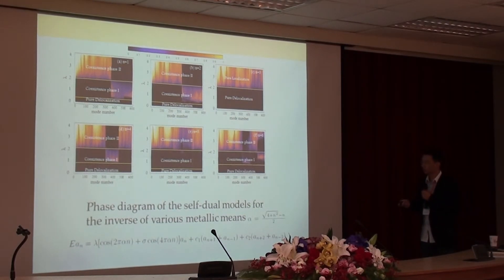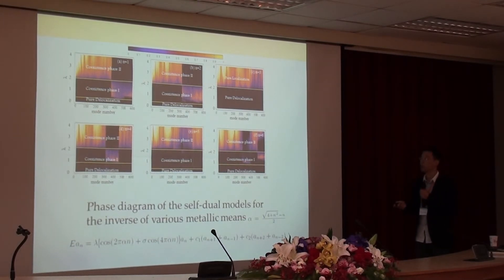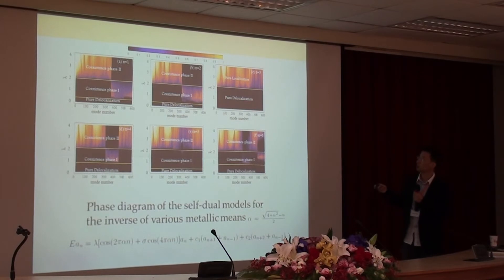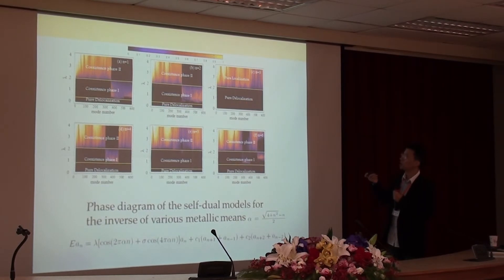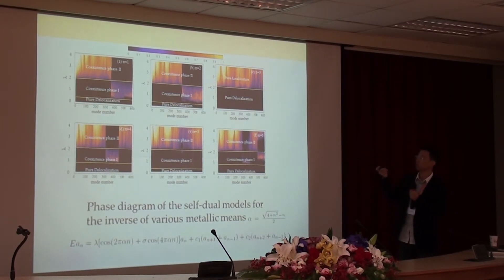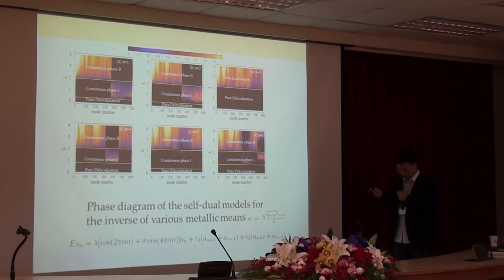We can also check the localization properties for different irrational numbers, parameterized by the metallic means. Interestingly, except for the case n equal to 3, all cases have a mobility edge. For n equal to 3, it is very special — all states become localized or delocalized simultaneously.